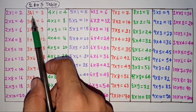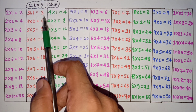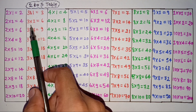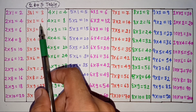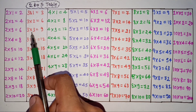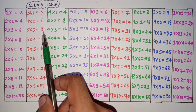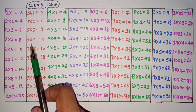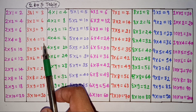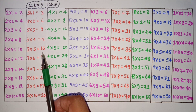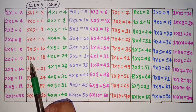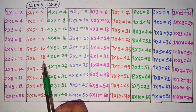3 1's are 3, 3 2's are 6, 3 3's are 9, 3 4's are 12, 3 5's are 15, 3 6's are 18.